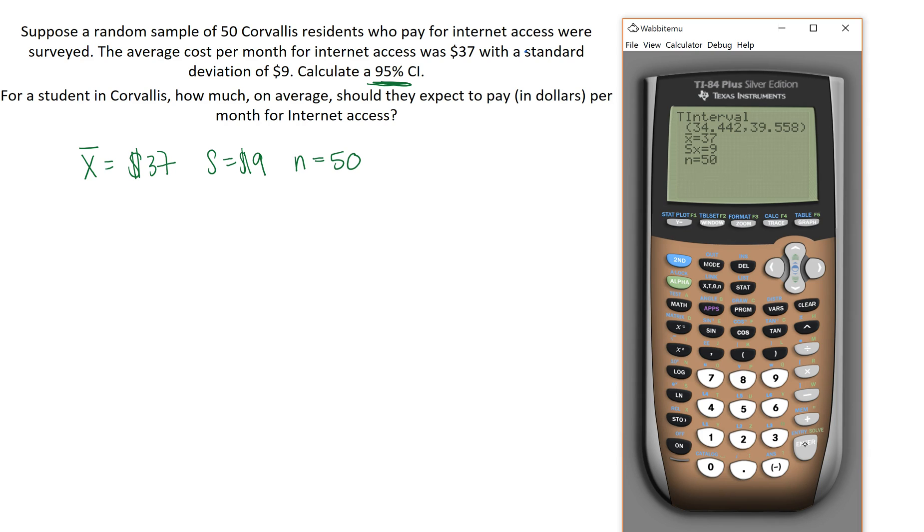Sure enough, we get an interval from 34.442 to 39.558. Since we're talking about dollars, this is our context. We're looking for a dollar amount for cost of internet. We're going to write out our 95% CI for μ. That's the parameter we're trying to estimate. The average amount it costs for internet access per month is from $34.44 to an upper bound of $39.56.